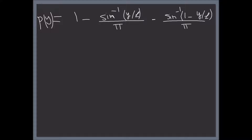Now, all values of Y are equally likely — this is very important; it is the fundamental law of statistical mechanics. The probability density of Y is simply one divided by L. Hence, the probability of crossing is P, which works out to one divided by (π·L) times the full integral.